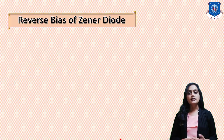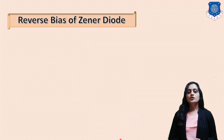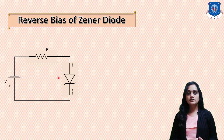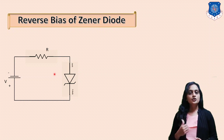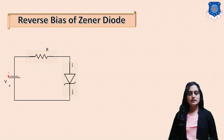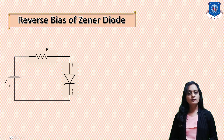Now we will see the Zener diode connected in the reverse bias condition. The circuit diagram consists of a DC power supply, a current limiting resistor, and the Zener diode connected in series. The anode terminal is connected to the negative terminal of the battery and the cathode terminal of the Zener diode is connected to the positive terminal of the battery. This is how it is connected in the reverse bias condition.